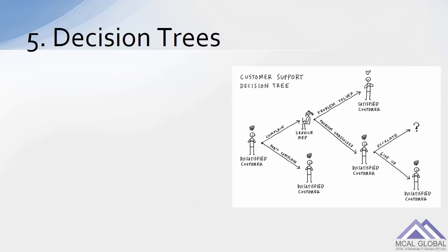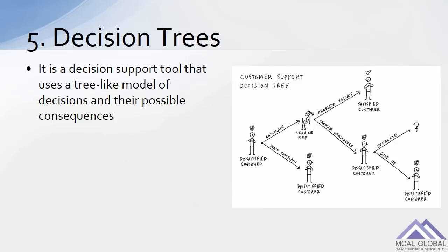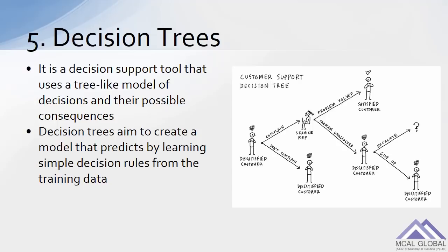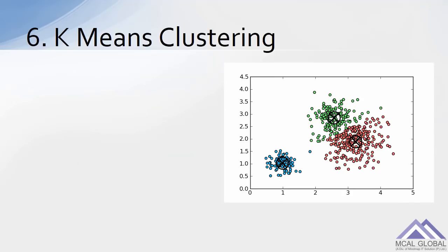Number five: decision trees. It is a decision support tool that uses a tree-like model of decisions and their possible consequences. Decision trees aim to create a model that predicts by learning simple decision rules from the training data.